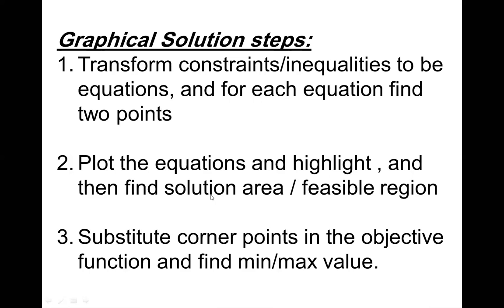Step three: take the corner points of the feasible region, substitute into the objective function, and evaluate. Mathematically, we can prove that one of the corner points maximizes the objective function and one of them minimizes it. So the graphical solution can be done in three steps: transform constraints to equations and find two points; plot and highlight; then evaluate corner points in the objective function.